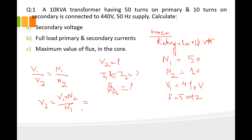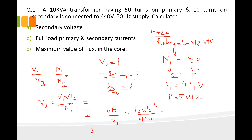Next, for full load primary current I1, the formula is: I1 = VA rating / V1. The VA rating is 10 × 10³ and V1 is 440 V. We can calculate the value of I1 using a calculator.